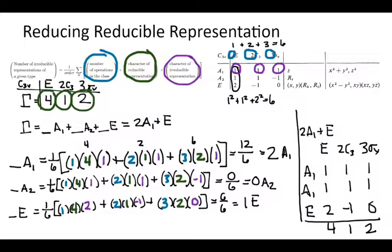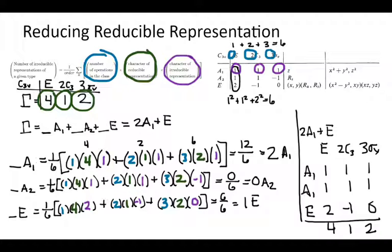What it means for a reducible representation to be a sum of irreducible representations is that if we add up the numbers in those rows, we get the total of the reducible representation. Because of the magic of group theory, there's only one possible way to add up those numbers and get that answer — that's what it means that those irreducible representations are orthogonal. There's no other way to represent this. It takes a little practice to get used to, but we'll go through this quickly in future videos.